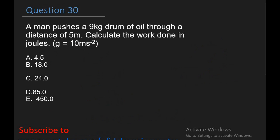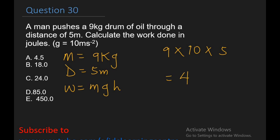Question 30, which is the last question. A man pushes a 9 kilogram drum of oil through a distance of 5 meters. Calculate the work done in joules. The acceleration due to gravity is 10 meters per second squared. The mass is 9 kg, the distance is 5 meters. Work done is mass times gravity times height. So 9 times the acceleration due to gravity is 10 and the height is 5. Multiply everything, it should give you 450 joules.